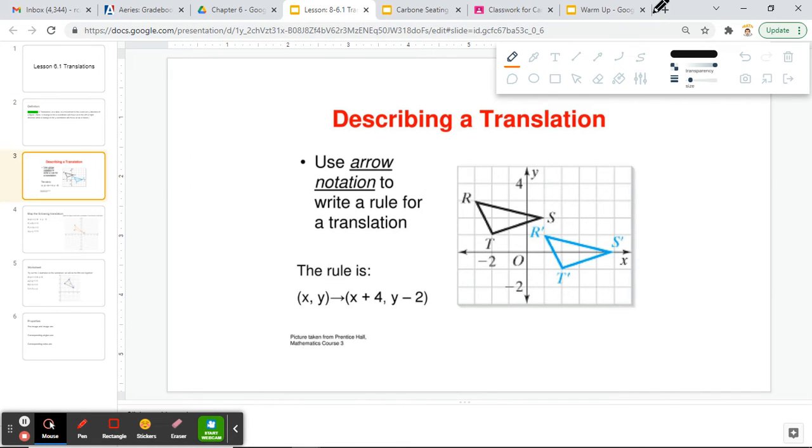So to describe this translation, we use arrow notation to write a rule for our translation. When we have a coordinate such as (x, y), if we move this to (x + 4, y - 2), our x point has to increase by 4 and our y point has to decrease by 2.